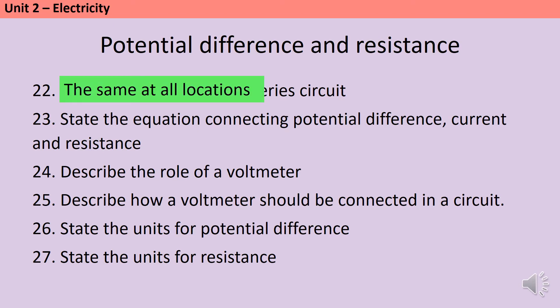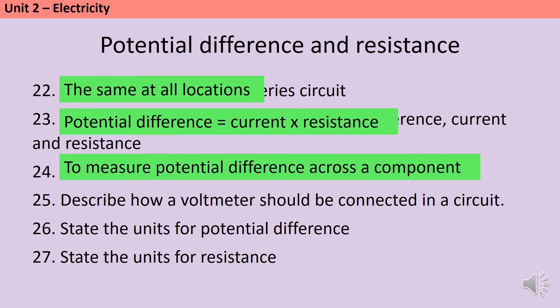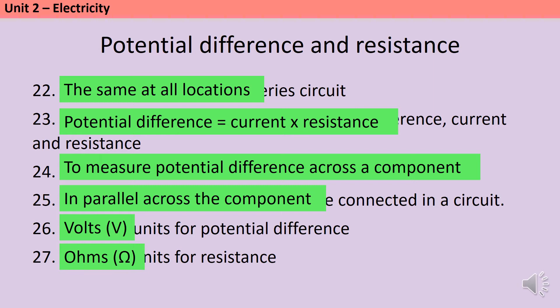Potential difference is current multiplied by resistance. Voltmeters are used to measure the potential difference across a component, so they should always be connected in parallel. Potential difference is measured in volts and resistance is measured in ohms.